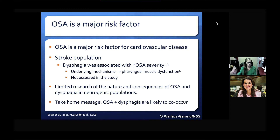We know that OSA is a major risk factor for cardiovascular disease, and one study in a stroke population found that dysphagia was associated with increased OSA severity in individuals following stroke. Dysphagia in the study was assessed using screening tools, so the pathophysiology isn't extremely clear. However, the perceived underlying mechanism may be pharyngeal muscle dysfunction, which is related to both disorders, though instrumental assessment was not conducted.